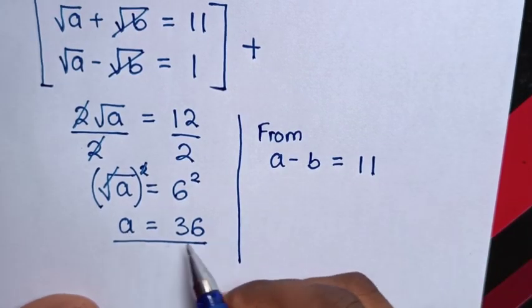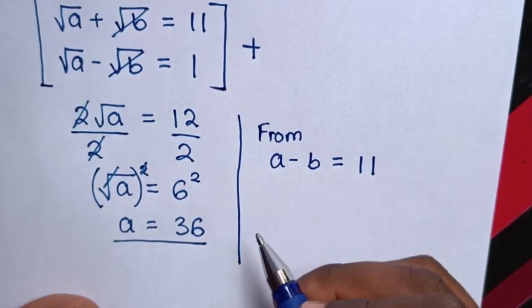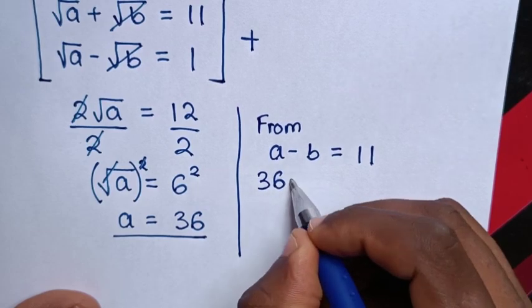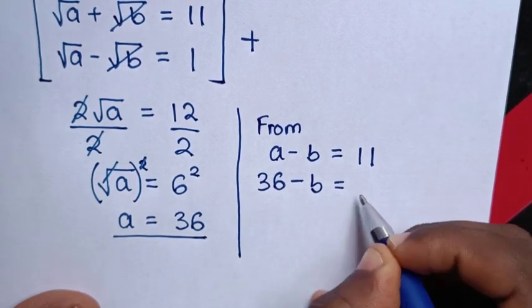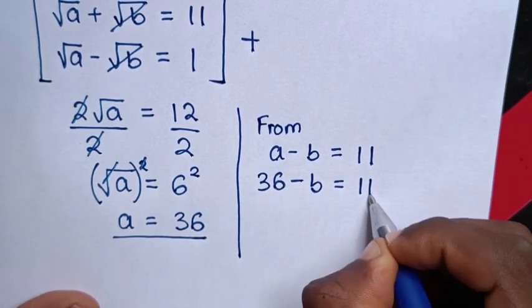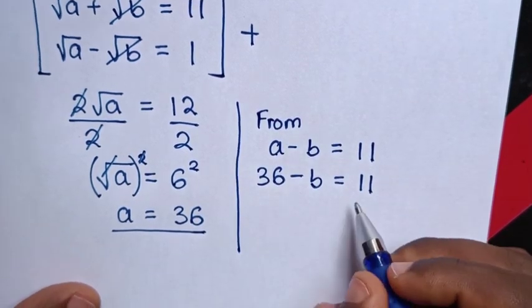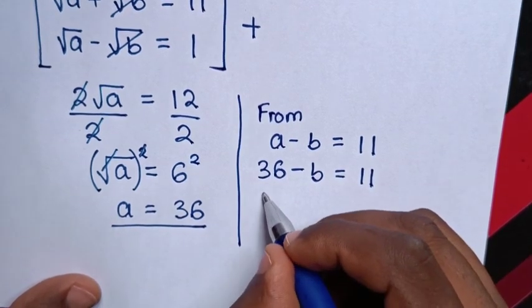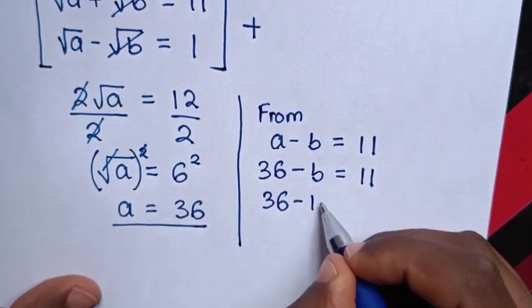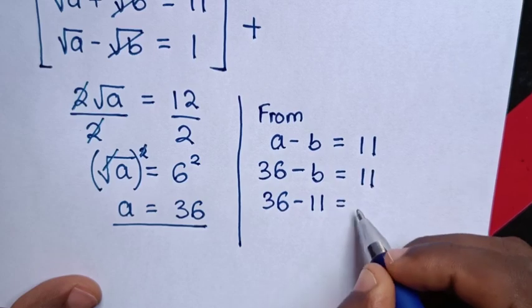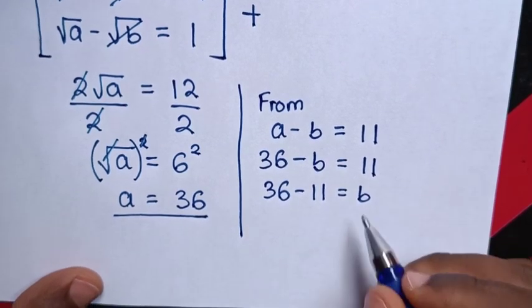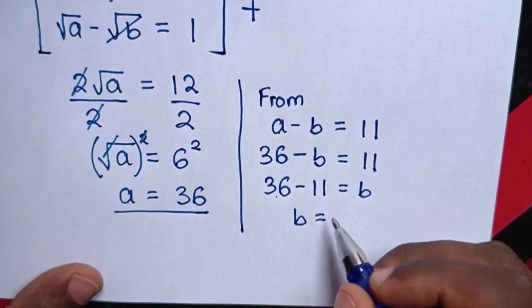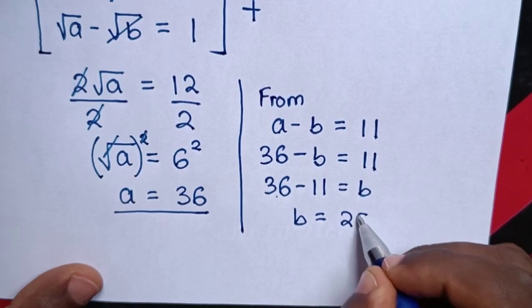Substituting a equals 36 into equation 1: 36 minus b equals 11. Rearranging, b equals 36 minus 11, so b equals 25.